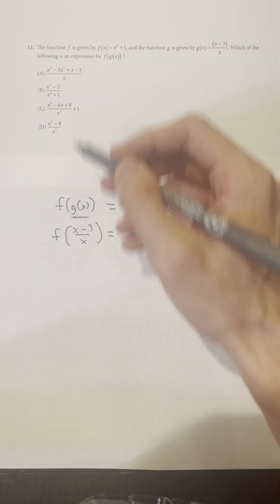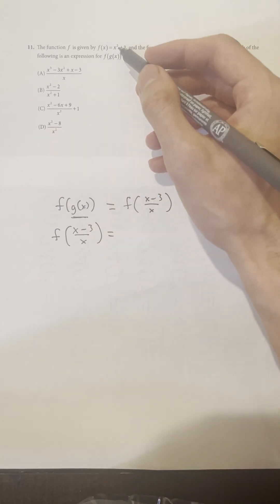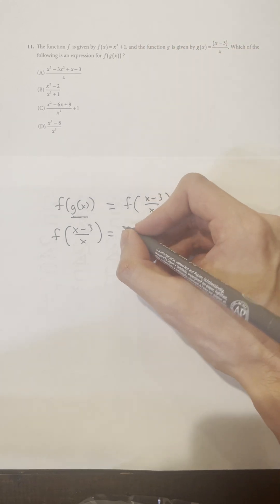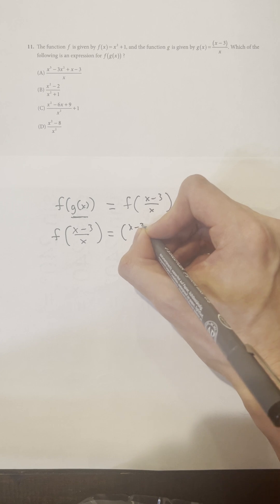What do I need to do on the right-hand side? I also need to change x to (x-3)/x.